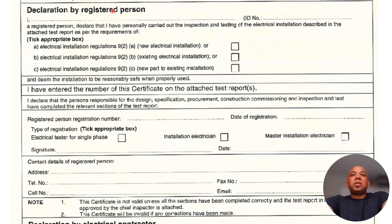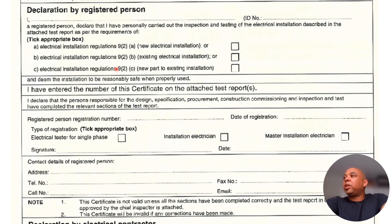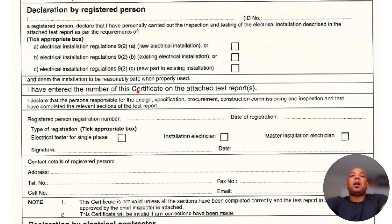This declaration is important. It's a known problem that a registered person sitting in the office sends an assistant out to do the inspection, collects the readings, and simply signs the certificate back at the office. That's why it's the responsibility of the homeowner or owner of the premises to verify that the registered person is actually carrying out the inspection themselves.